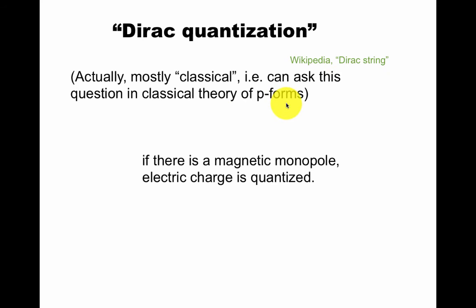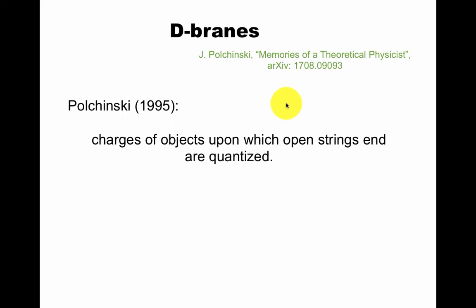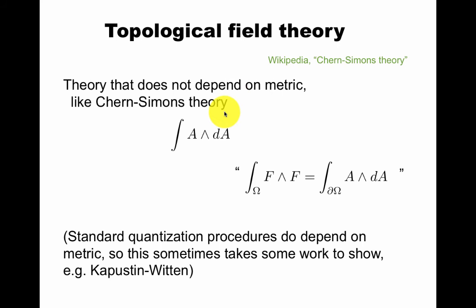Dirac quantization says if there are magnetic monopoles, electric charge is quantized. This is a very interesting argument that uses the theory of P-forms. Same with D-branes in string theory. The charges of the objects upon which open strings end, they're called Dirichlet branes, are quantized. In this beautiful memoir, this is all described. Topological field theory is another example. It's a theory that does not depend on lengths and angles, like Chern-Simons theory. This is the action of Chern-Simons theory, and it's related to the thing I wrote before, like this. Here's a little footnote.